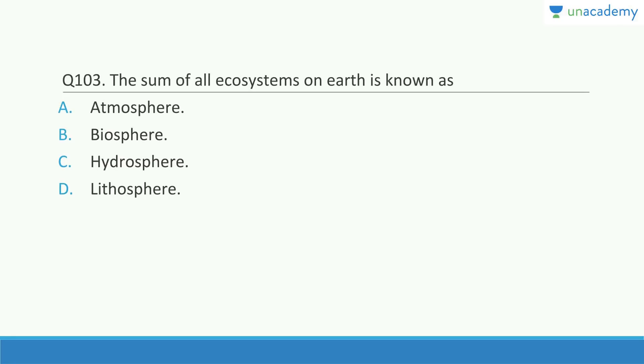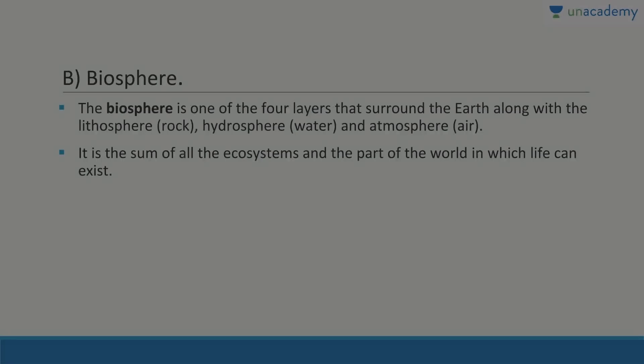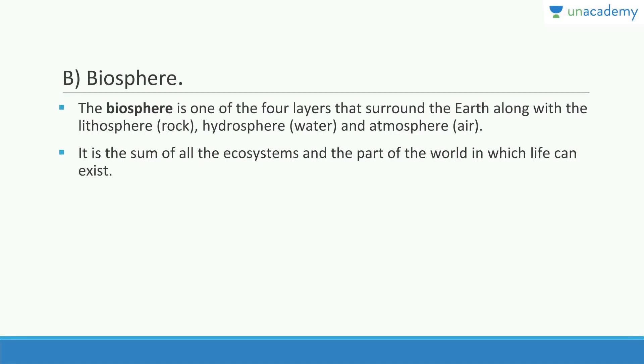The sum of all the ecosystems on earth is known as the biosphere. Biosphere is one of the four layers that surround the earth, along with lithosphere, hydrosphere, and atmosphere. It is the sum of all the ecosystems and the part of the world in which life can exist — the only limited part where all three layers interact.